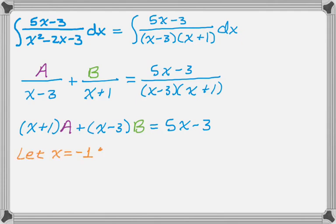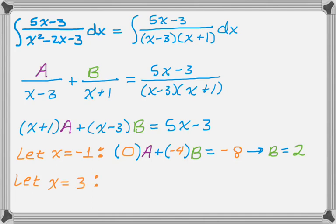So I'm going to let x equal negative 1. You can see that A disappears because the coefficient becomes 0. The coefficient of B becomes negative 4, and on the right hand side I have negative 8, so I know that B is 2. Similarly, if I let x equal 3, coefficient of A becomes 4, coefficient of B becomes 0, and then the right hand side is 12, so I know that A is 3.